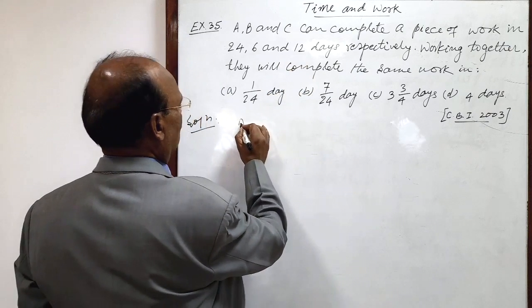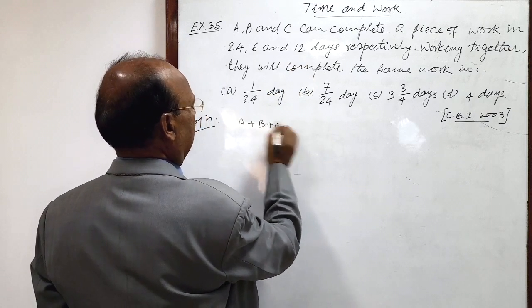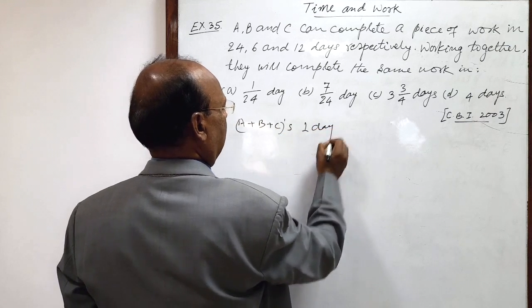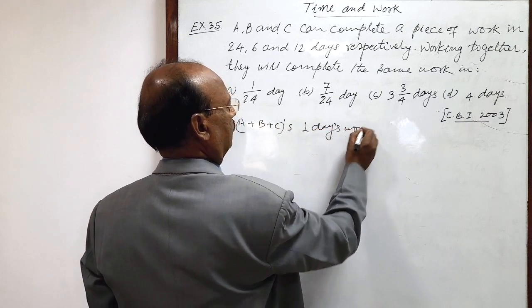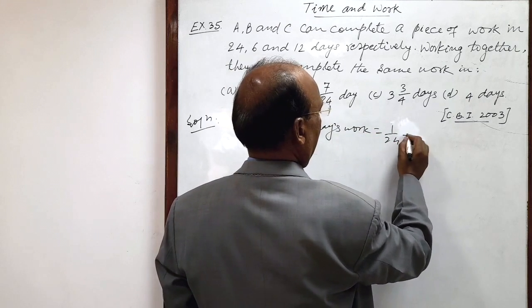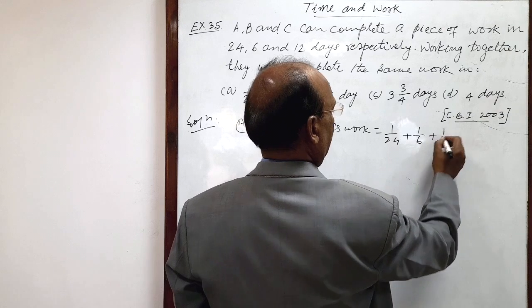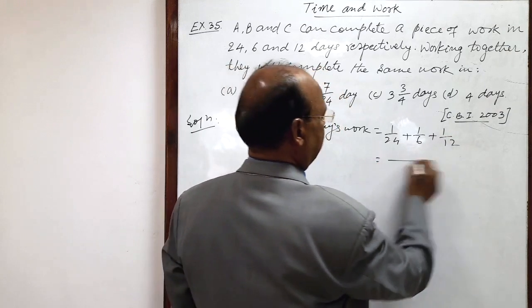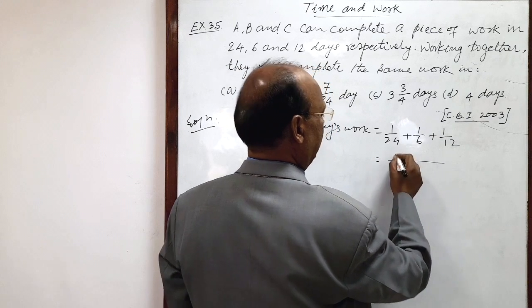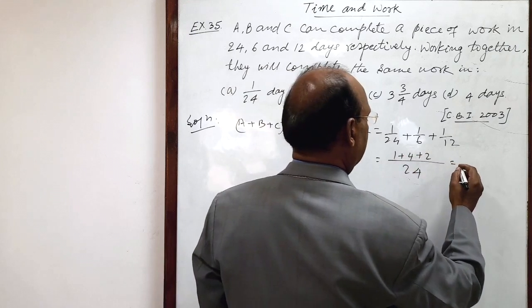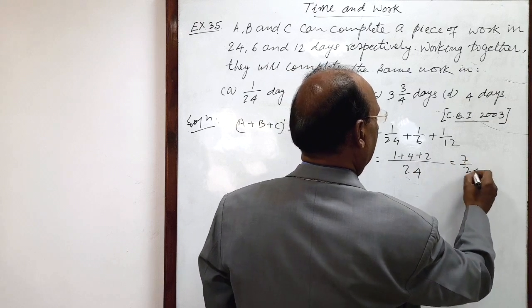We can write here, A plus B plus C's one day's work is equal to 1 by 24 plus 1 by 6 plus 1 by 12. Let us simplify it. Here, LCM is 24, in numerator 1 plus 4 plus 2 and this is equal to 7 by 24.